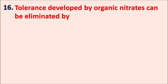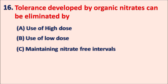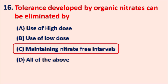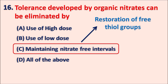Question 16: Tolerance developed by organic nitrates can be eliminated by: A. Use of high dose, B. Use of low dose, C. Maintaining nitrate-free intervals, D. All of the above. The right answer is C — maintaining nitrate-free intervals. By adjusting the dose we cannot prevent the tolerance. Since tolerance develops because of depletion of free thiol groups, when we maintain a nitrate-free interval the thiol groups can be restored, leading to restoration of the activity of organic nitrates. In this way tolerance can be eliminated by maintaining nitrate-free intervals.